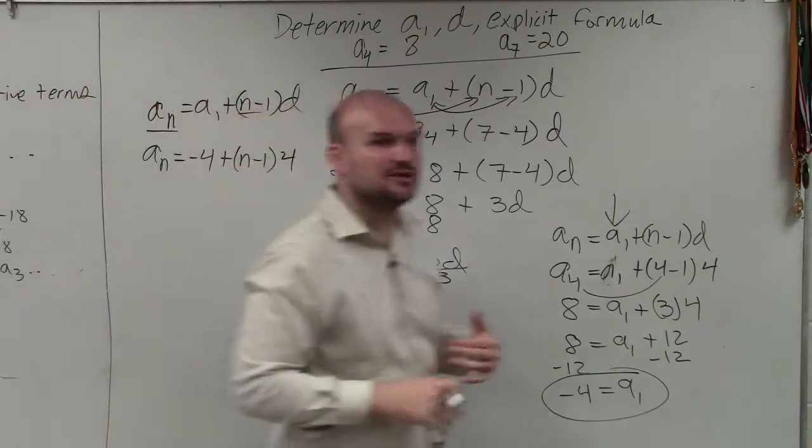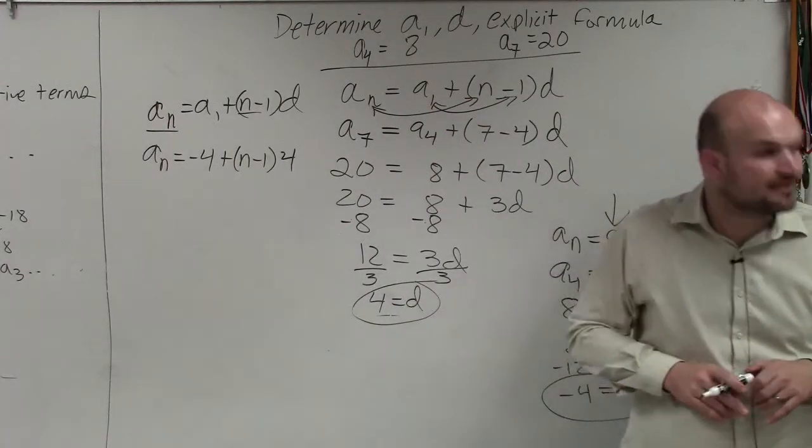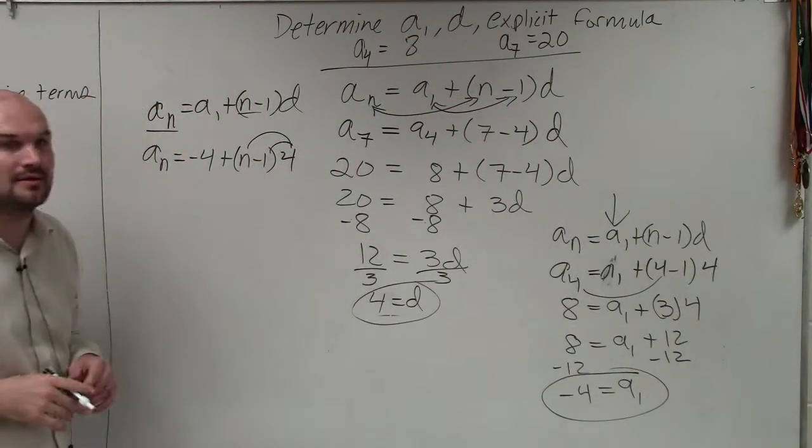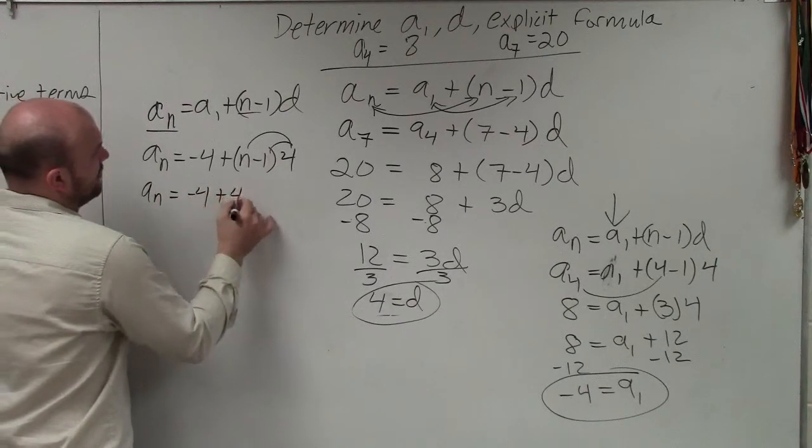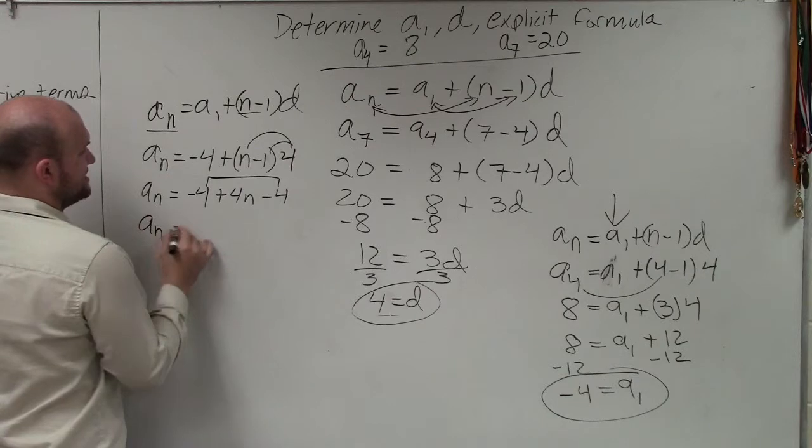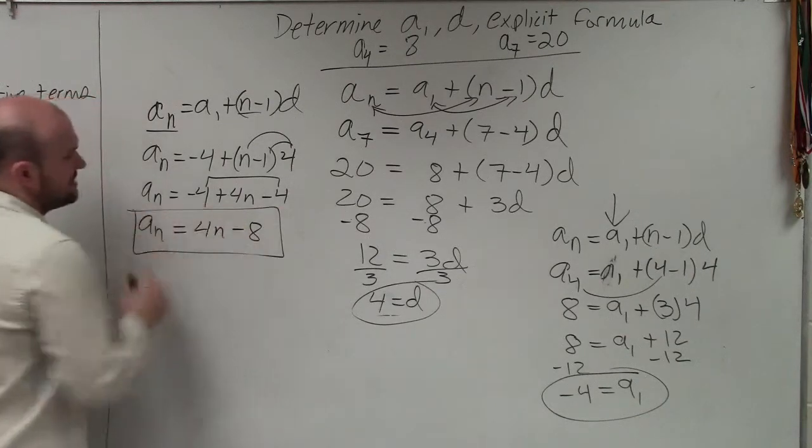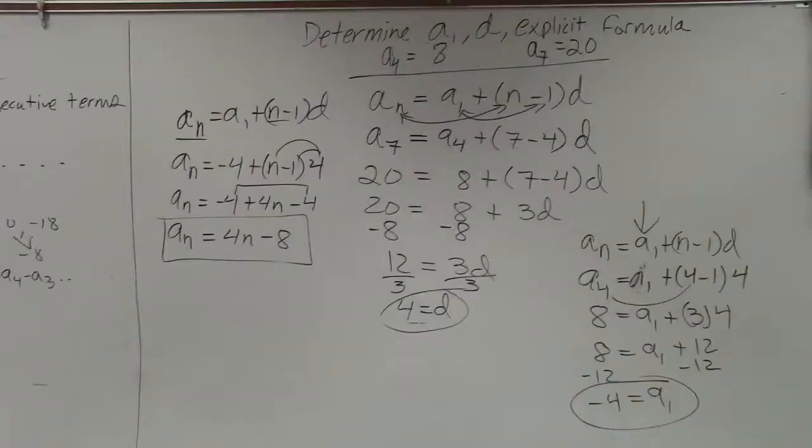However, I will tell you, if you see explicit formula on a test, it's not going to be in that form. They're going to simplify it. So to simplify this, we're going to have to apply a distributive property. And therefore, you have a sub n equals negative 4 plus 4 n minus 4. We combine like terms. A sub n equals 4 n minus 8. That is what you guys would see on a multiple choice test, would it be in that format. So this is a big question, guys.